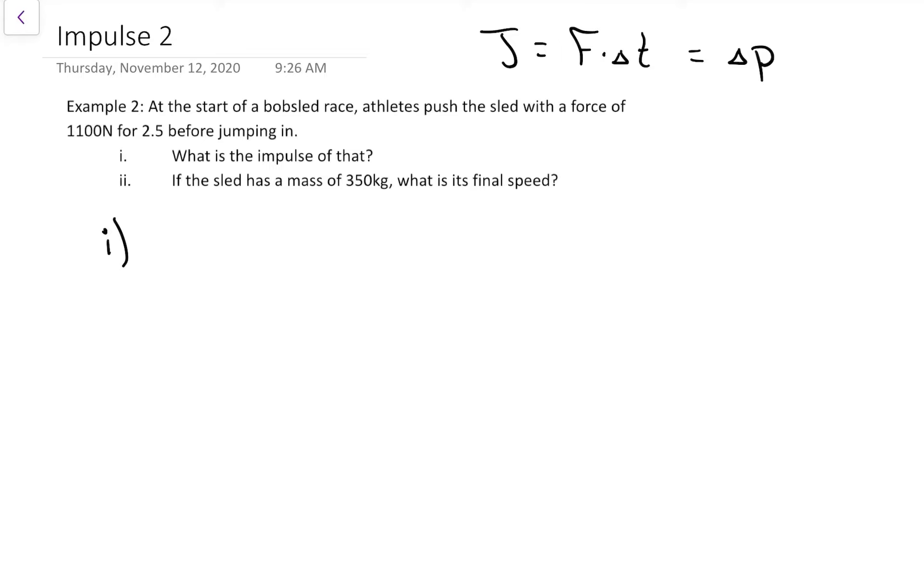Looking at this question, I know more about the forces and times to start off, so that's the version of impulse that I'll use. J for impulse is equal to force multiplied by time. So these people pushing the bobsled, they push with 1,100 newtons for 2.5 seconds.